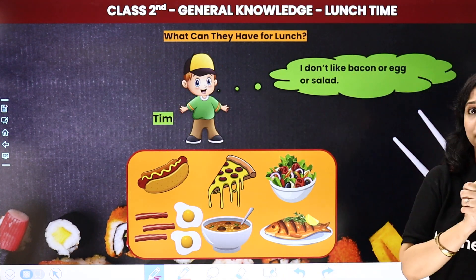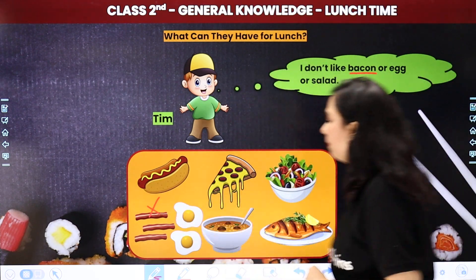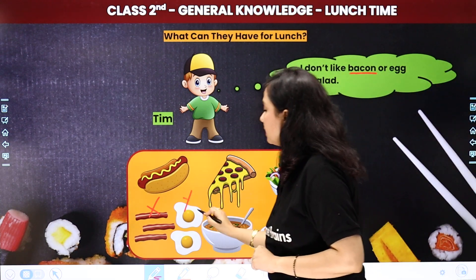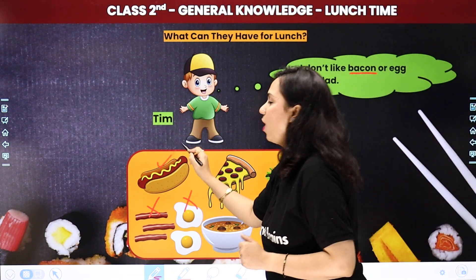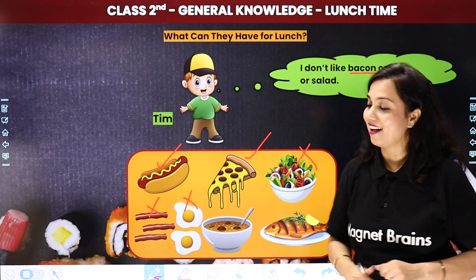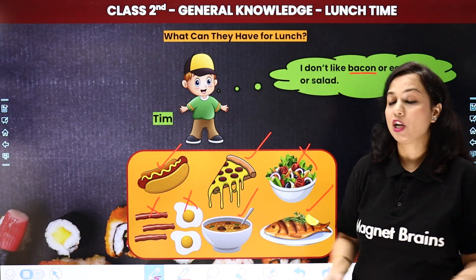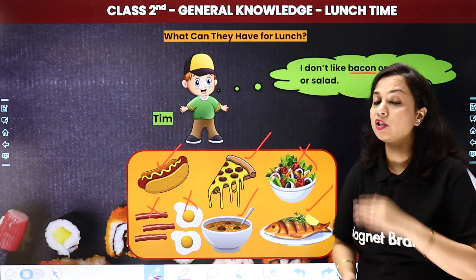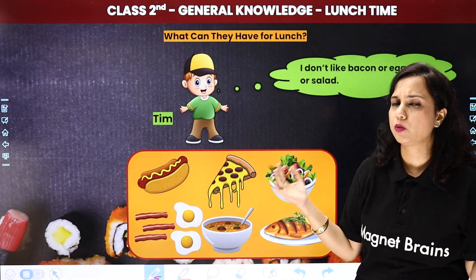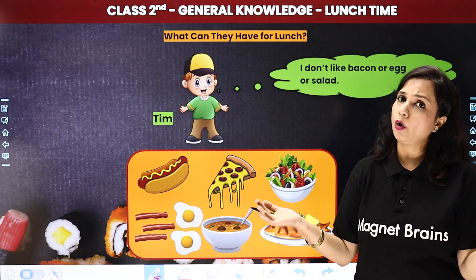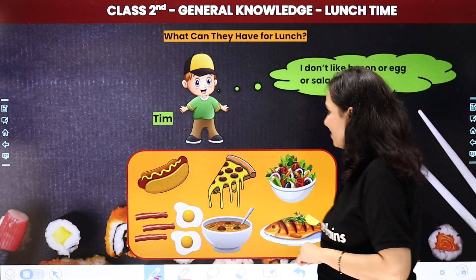Ab Tim kya kha raha hai? Tim ko bacon pasand nahi, Tim doesn't like eggs, and Tim doesn't like salad. So what does Tim like? Tim likes to have hot dog, pizza, soup, and fish. Toh yeh hai Tim ka lunch. So, children, yeh the aapke friends — Emma, Jack, aur Tim — jinke liye aapne help ki. Koi baat nahi agar aapko yeh options nahi khane. There are other options also which you can eat, my dear students.